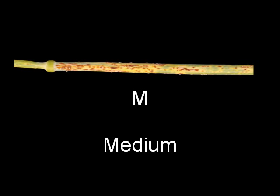Moving forward to the next one, you see there's more disease development relative to the one we've just described. We might call this a moderately resistant to moderately susceptible response. You see the pustules are getting larger. By these letters we are describing the pustules — we are not so much describing the amount of disease, but rather just the symptoms of the pustules or the uridinia.